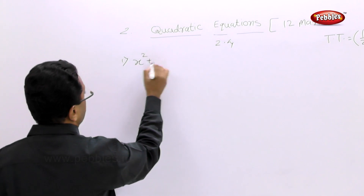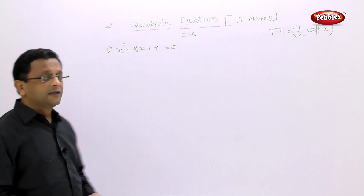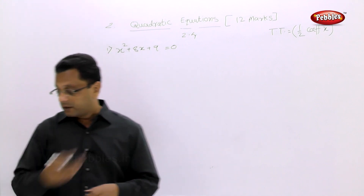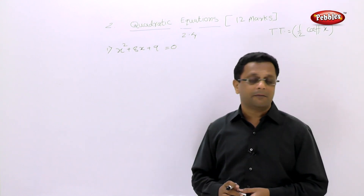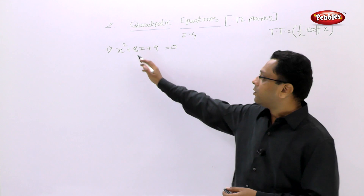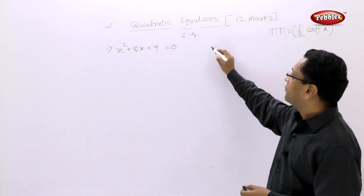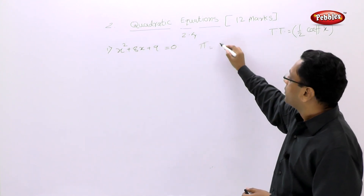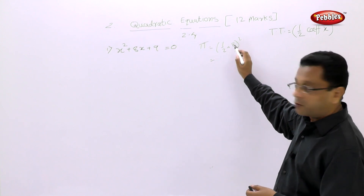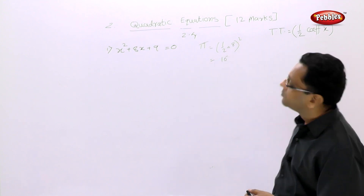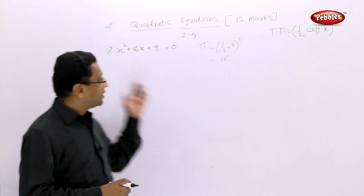The first example is x² + 8x + 9 = 0. This type of completing-the-square example is worth 3 marks in the exam and appeared in the March 2013 exam. First, move the 9 to the right side — it becomes minus 9. Then find the third term: half the coefficient of x is 4, so 4² = 16. Add 16 to both sides.